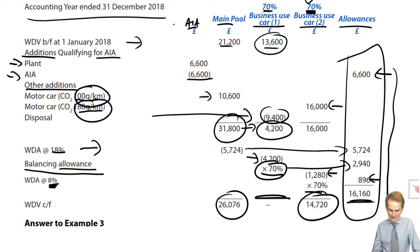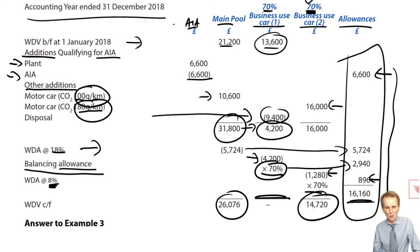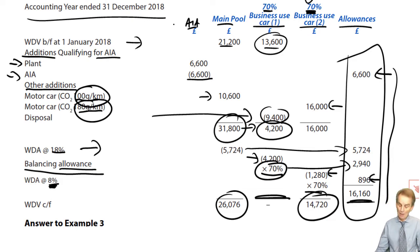Go back through that exercise, make sure you're happy with it, and then tune back in. We'll then look at the other category of non-pool asset that exists — one you're unlikely to see in the context of an unincorporated trader, but more likely in a corporate tax capital allowances computation. We'll explain all of that when you rejoin us.